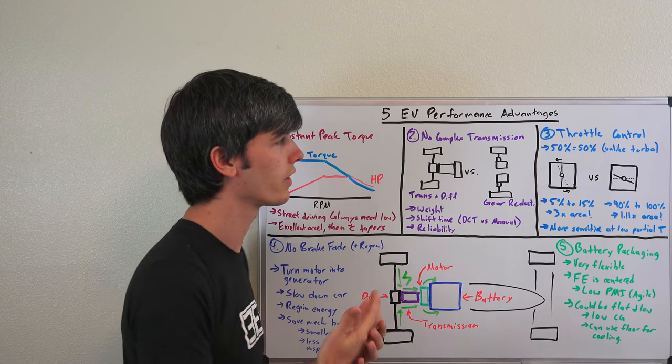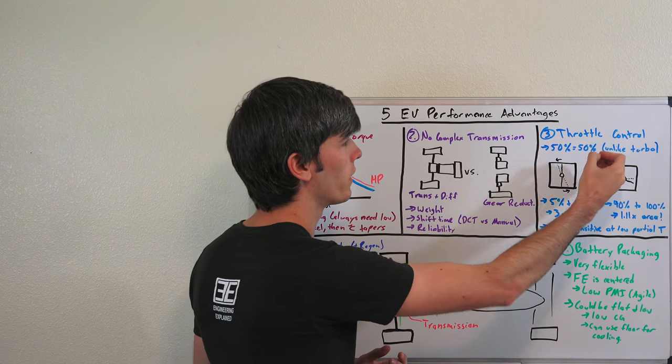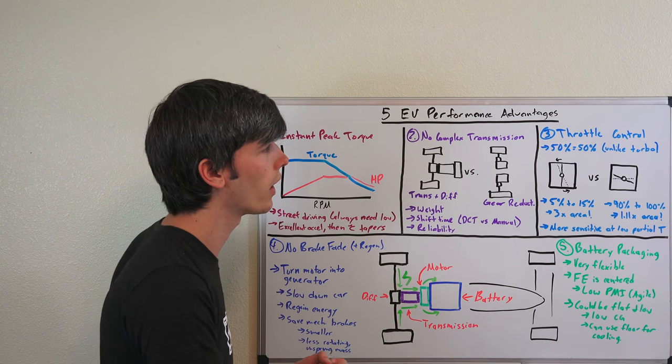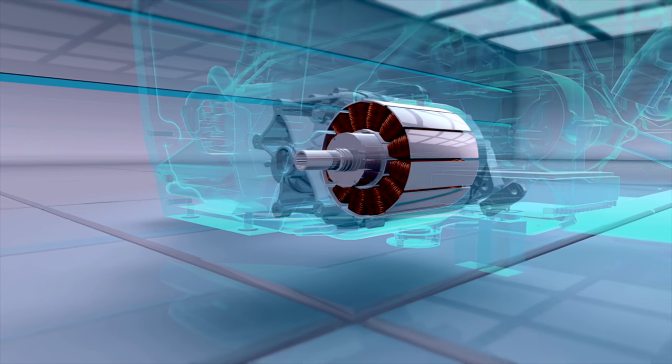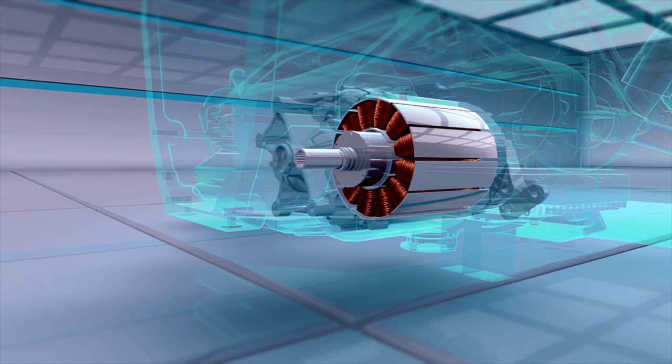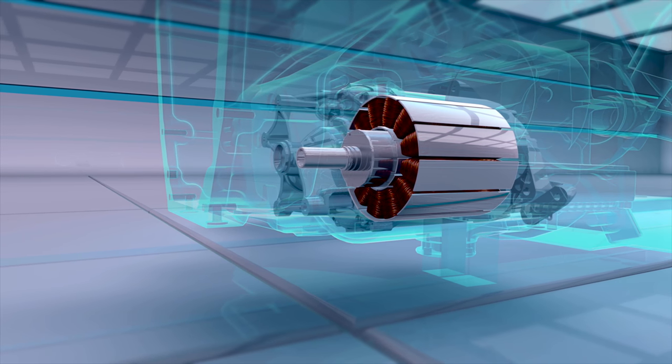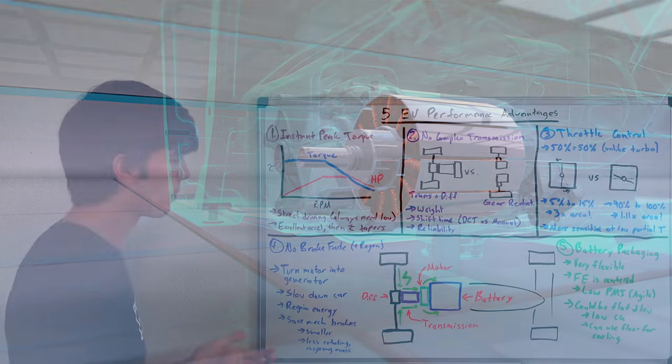Mechanical does have a nice feel to it, but with an electric vehicle you can get exactly what you ask for with that throttle pedal because you can choose exactly how much power you want it to deliver at any given position, versus internal combustion engines which are more sensitive when you're at low partial throttle.